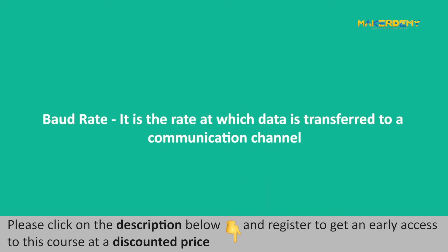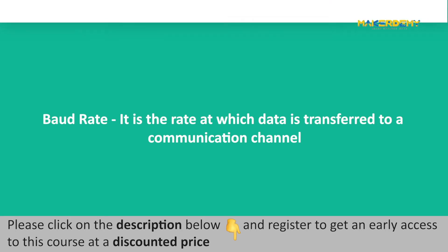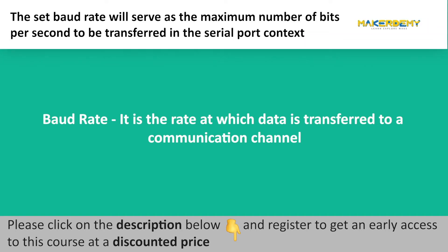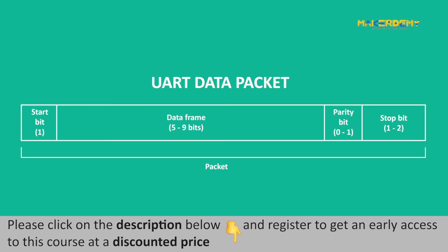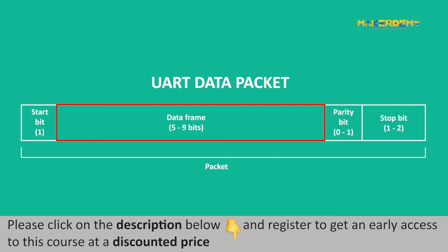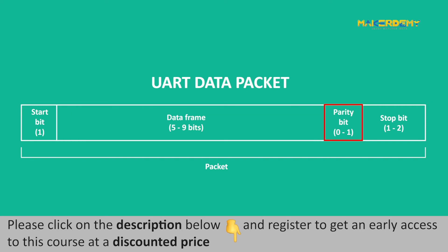And stop bits for proper operation. The baud rate is the rate at which data is transferred to a communication channel. The set baud rate will serve as the maximum number of bits per second to be transferred in the serial port context. UART transmitted data is organized into packets. Each packet contains one start bit, five to nine data bits in a data frame, and an optional parity bit.